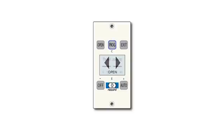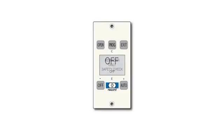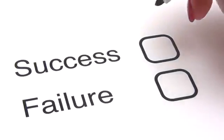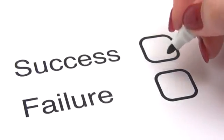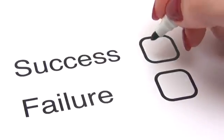Pressing the Program button allows the door to use an adjustable, reduced opening. As the door turns on, the Smart Panel display will remind the user to perform an Atom daily safety check.